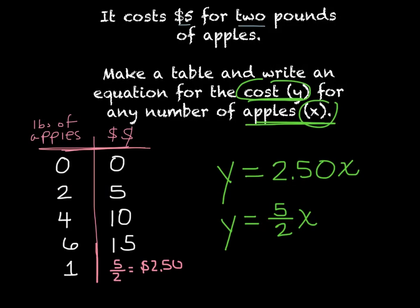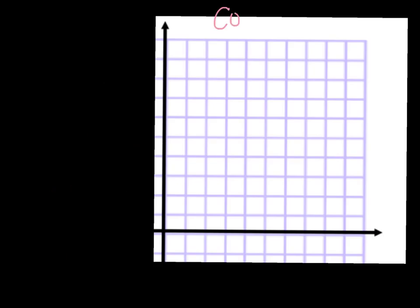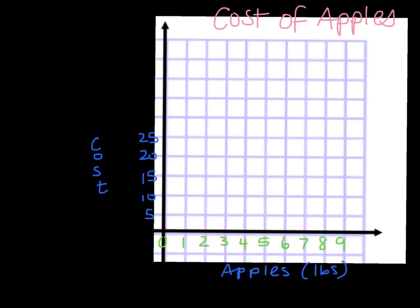Now we're going to graph this equation and see what it looks like. I'll title the graph 'Cost of Apples' and number the axes. I'm counting by 5 on the cost axis because it costs $5 for 2 pounds and $10 for 4 pounds. I'll plot the points: 0 pounds costs $0, 2 pounds costs $5, 4 pounds costs $10, and 6 pounds costs $15. I can see it's making a straight line, so I'll connect and extend it.